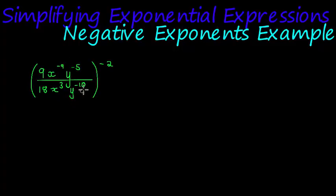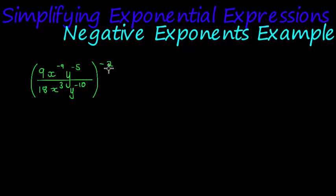Whenever we have brackets with an exponent, and inside the brackets we have a single term — meaning no addition or subtraction, just a bunch of factors — what I would do is simply distribute the exponent on the outside of the bracket to every factor, multiplying with its exponents.